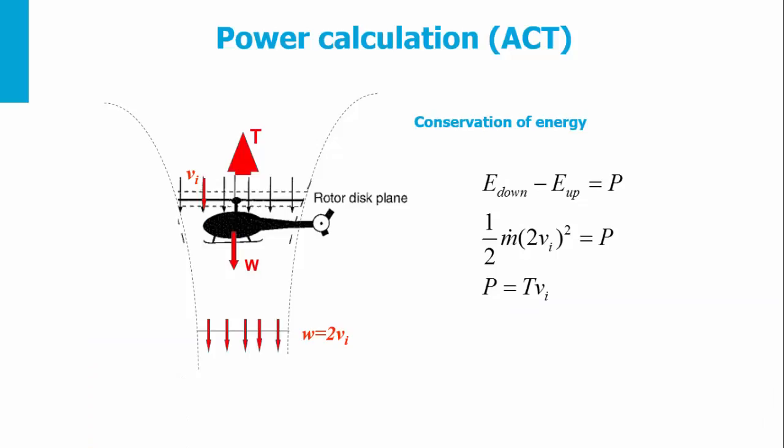For the power calculation, we apply the conservation of energy. The energy down in the wake minus the energy up in the wake equals the power. The energy up in the wake is zero as we are hovering and there is no velocity of the helicopter. Down in the wake, the flow is accelerated to twice the induced velocity at the rotor level.